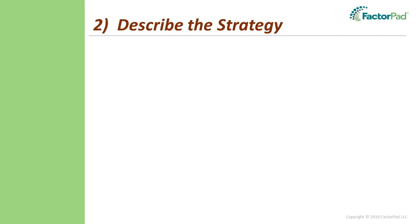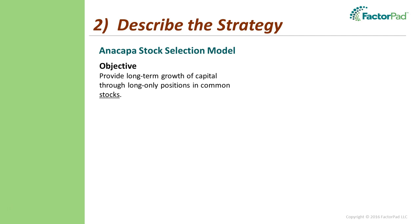Step two: describe the strategy. There are numerous strategies, often exotic ones involving derivatives, commodities, futures, currencies, or more plain vanilla choices like stocks and bonds. You should be able to explain the strategy on one page. Let me show you the example stock strategy built specifically for this presentation — it's called Anacapa, named after a small volcanic island off the coast of California.